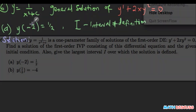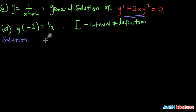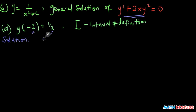Now here is number 6. We're given y equals 1 over x squared plus c as a general solution of the differential equation. We're told to find a particular solution that satisfies the initial condition: when x equals negative 2, y equals half. We're also told to find the interval of definition.